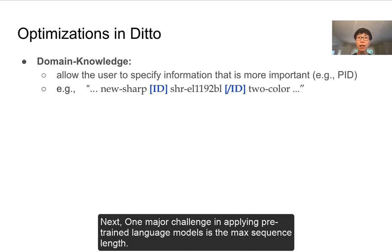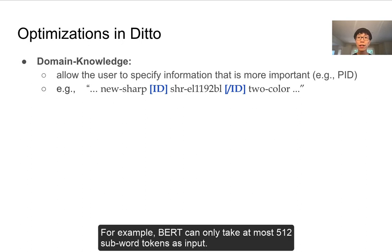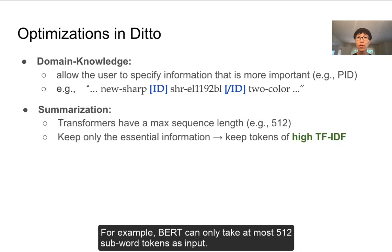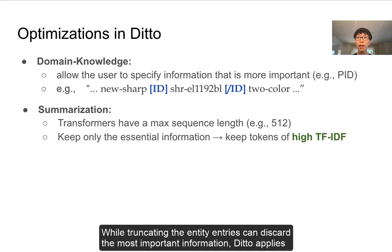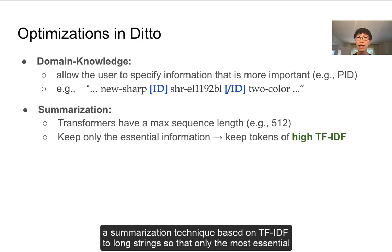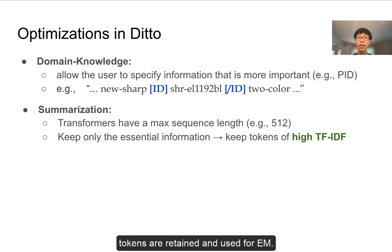Next, one major challenge in applying pre-trained language models is the max sequence length. For example, BERT can only take at most 512 subword tokens as input. While truncating entity entries can discard the most important matching information, DITTO applies a summarization technique based on TF-IDF to long sequences so that only the most essential tokens are retained and used for EM.